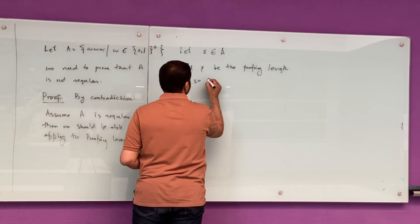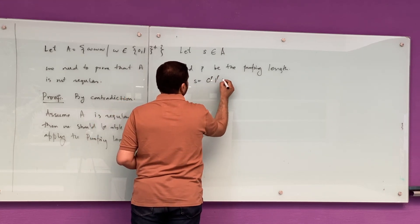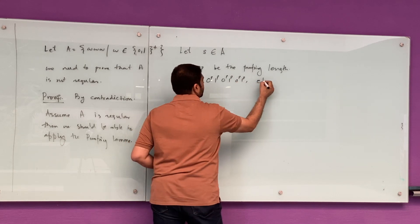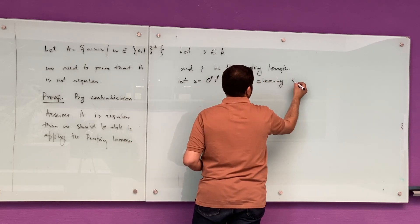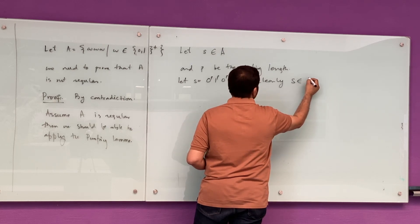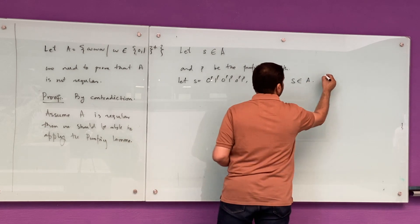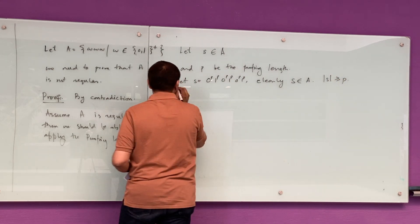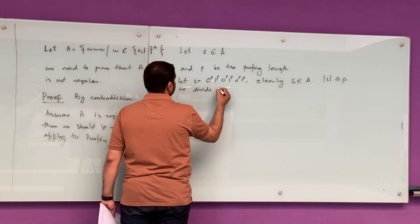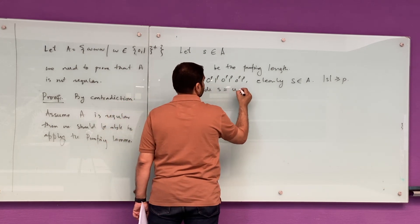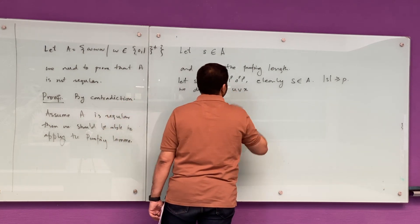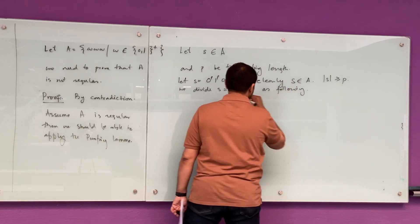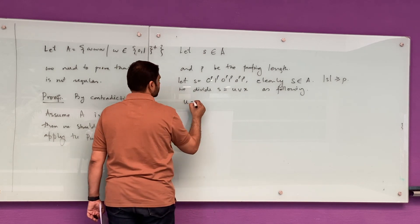Let S be a string in A, and P be the pumping length. S equals 0^P 1^P 0^P 1^P 0^P 1^P. That is, we have three copies of P zeros and P ones. There are three copies of two strings.